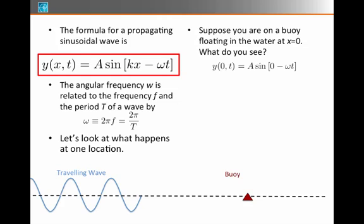Let's look at what happens at one location. Imagine I'm looking at a water wave and it's a sinusoidal wave traveling to the right, and I'm at location x equals zero. What do I see?